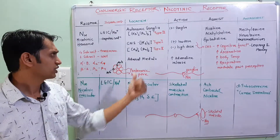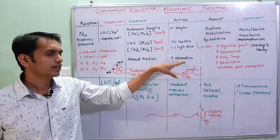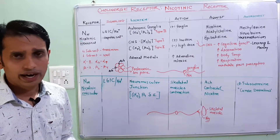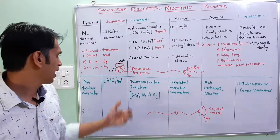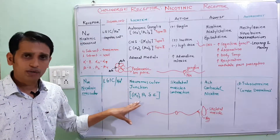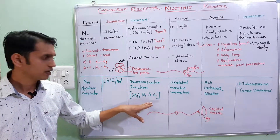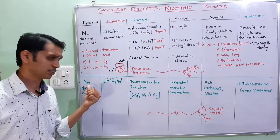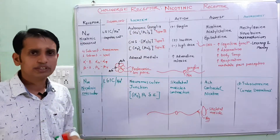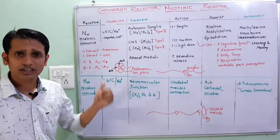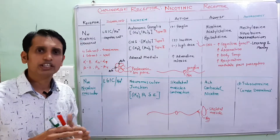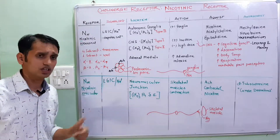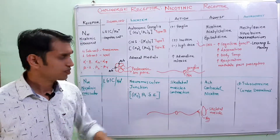NN receptors are also present in the adrenal medulla, where activation causes an increase in adrenaline release. Now, the NM receptors — nicotinic muscular receptors — are mainly found in the neuromuscular junctions. They are composed of two subunits of alpha-1, one subunit of beta-1, one subunit of delta, and one subunit of epsilon. This is different from the NN receptor composition. It is also a pentameric structure with an ion pore for sodium ion channels, and sodium ion channel activation enhances the activity of skeletal muscles. The main action of NM receptors is skeletal muscle contraction.